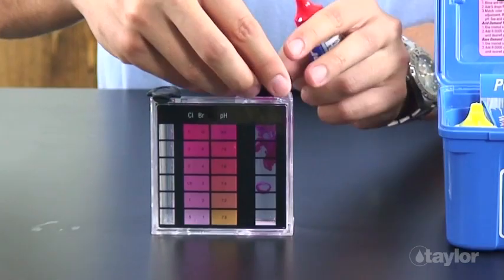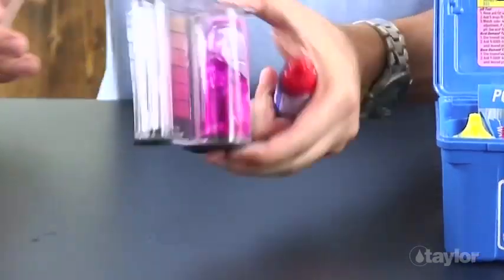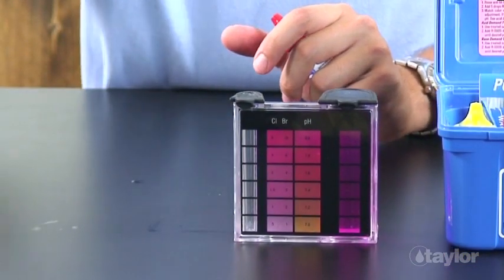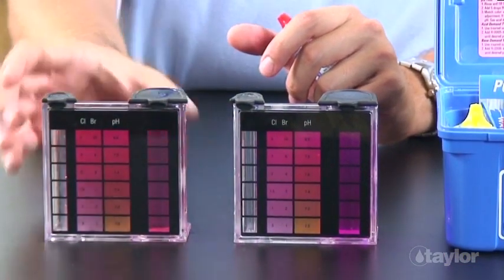The phenol red will react with high chlorine or bromine to create a hue not seen on the color standards, usually bluish purple. Generally, this happens around 10 parts per million of chlorine or 20 parts per million of bromine.